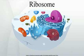Eukaryotes have 80S ribosomes, each consisting of a small and large subunit. Their 40S subunit has an 18S rRNA and 33 proteins. The large subunit is composed of a 5S rRNA (120 nucleotides), 28S rRNA (4700 nucleotides), a 5.8S rRNA (160 nucleotides), and 46 proteins.